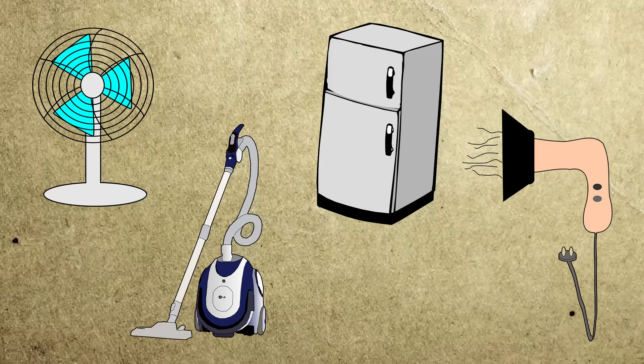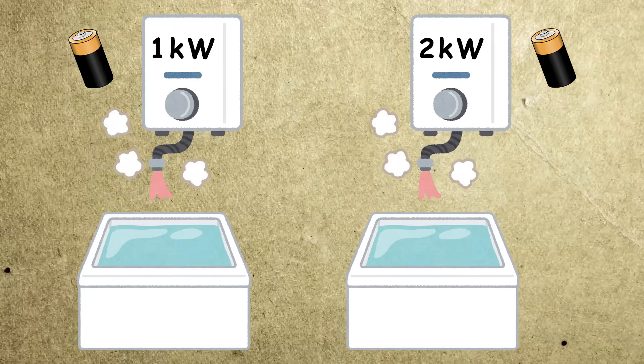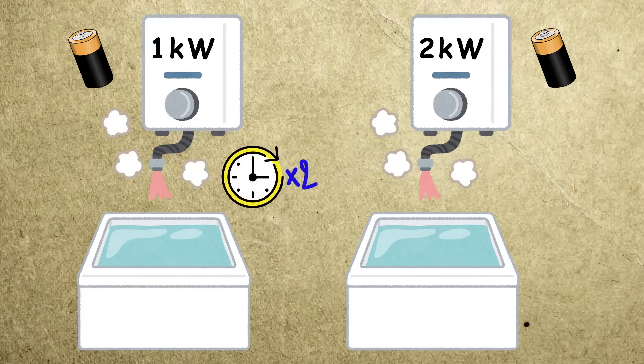This principle is also present in electrical devices. A boiler with one kilowatt would consume the same amount of electricity as a two kilowatt boiler to heat up the same volume of water, but it will take twice the time.